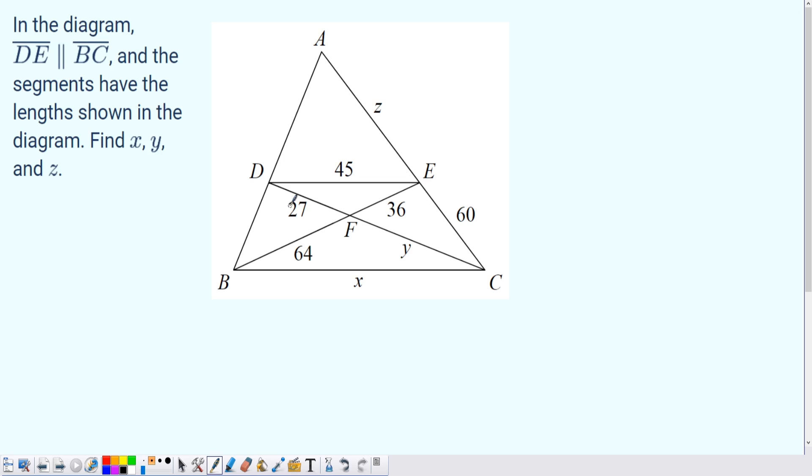The first notable thing it tells you is that DE and BC are parallel, and whenever you think parallel lines, you should think congruent angles. For example, the angle EDC must be congruent with DCB because they are alternate interior. Similarly, angle DEB must be congruent with FBC because they are also alternate interior.